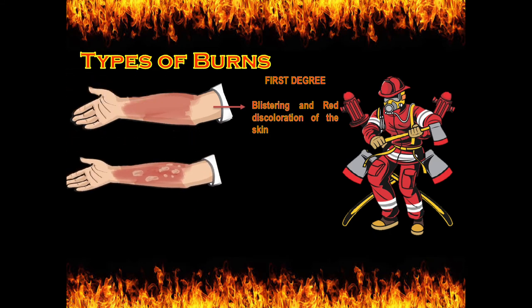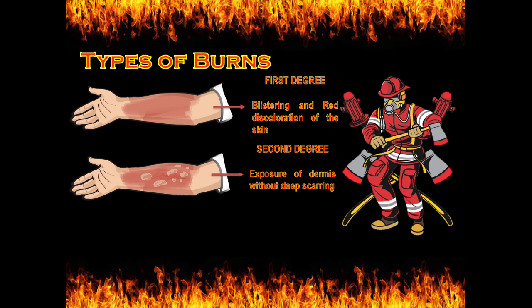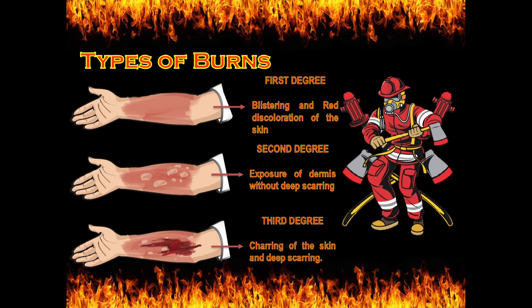Second degree burn involves exposure of the dermis without deep scarring — when the outer skin (dermis) is exposed, that is second degree burn. Third degree burn involves charring of the skin and deep scarring.